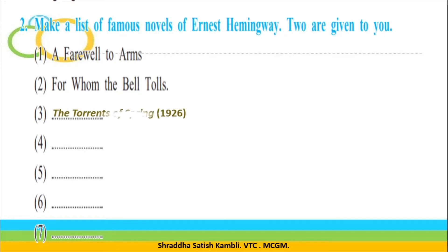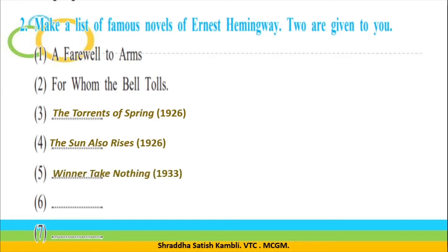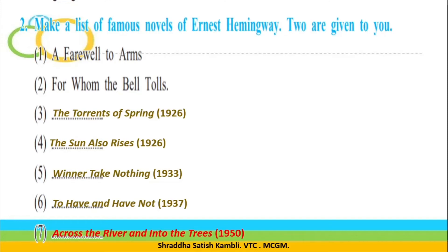So you have The Torrents of a Spring, which he wrote in 1926. Then you have The Sun Also Rises, which he also wrote in 1926. Then you have Winner Take Nothing in 1933, To Have and Have Not in 1937, and Across the River and Into the Trees, which he wrote in 1950. And finally, the book that we are going to review today, The Old Man and the Sea, was published in the year 1952. So these are some famous novels by the same writer, Ernest Hemingway.